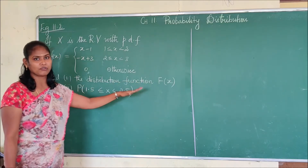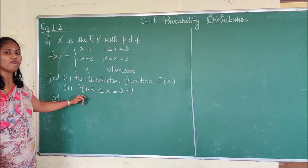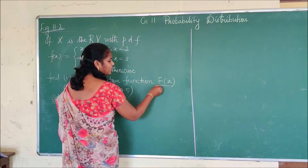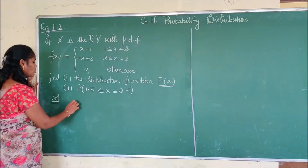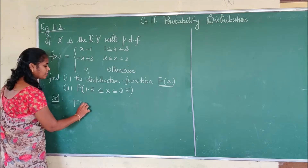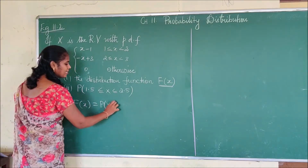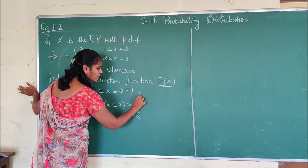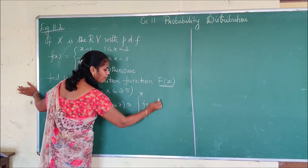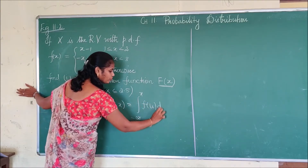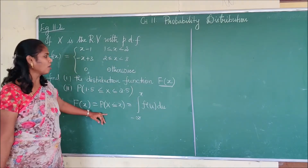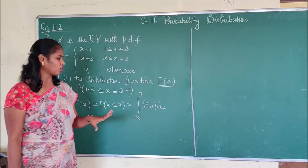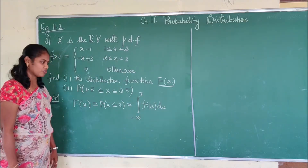We also need to find the value of P of 1.5 less than or equal to X less than or equal to 2.5. For finding capital F of X, we have the formula: F of X is nothing but P of X less than or equal to X, which is the integral from minus infinity to X of f of u du. This is the definition for the distribution function, otherwise called the cumulative distribution function.